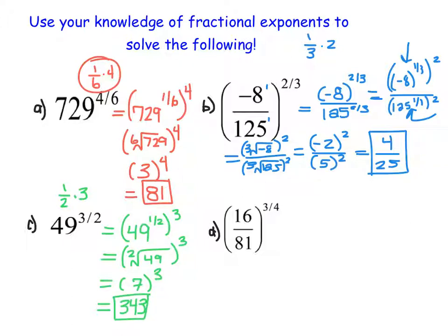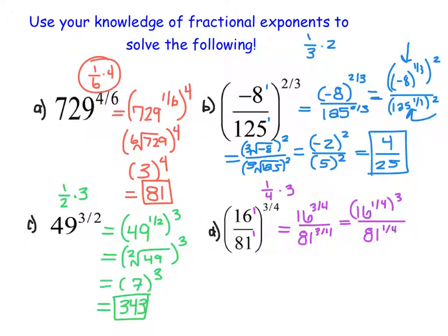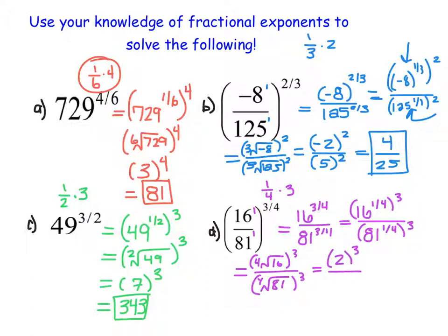My final example here: we have 16 over 81 to the power of 3 fourths. I start with 16 to the power of 3 fourths, over 81 to the power of 3 fourths. I then rewrite these as 1 fourth times 3, using the powers-to-powers rule: 16 to the power of 1 fourth, all raised to the third, over 81 to the power of 1 fourth, all raised to the third. That's the fourth root of 16, raised to the third, over the fourth root of 81, raised to the third. The fourth root of 16 is 2, the fourth root of 81 is 3, and taking each to the power of 3 gives 8 over 27.